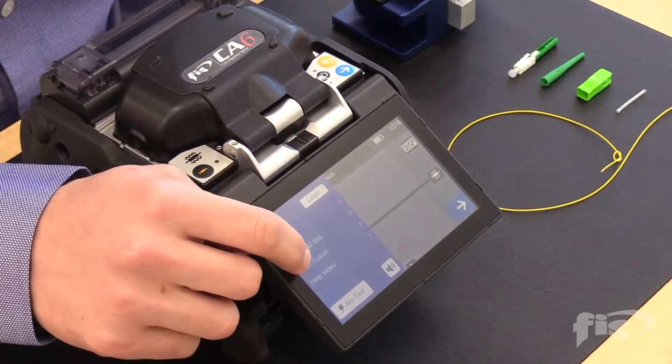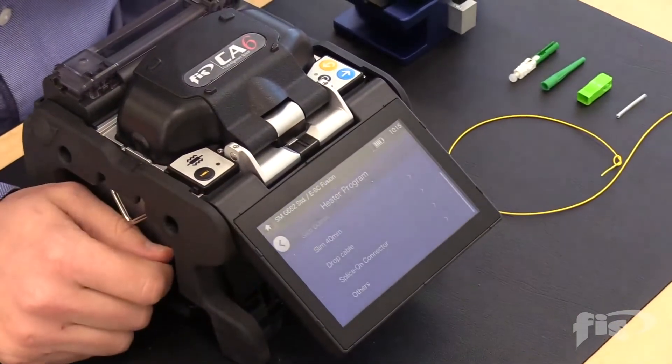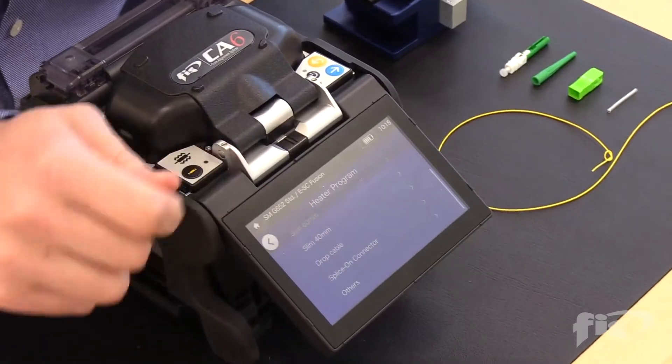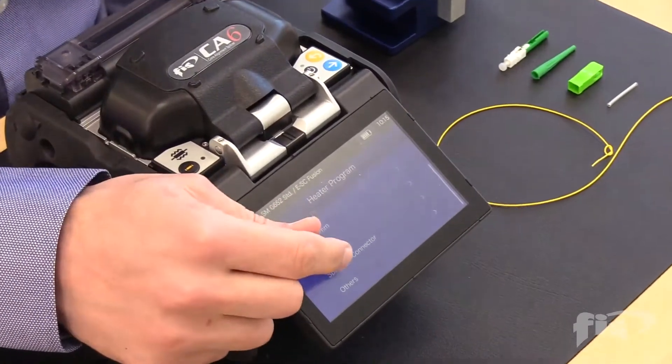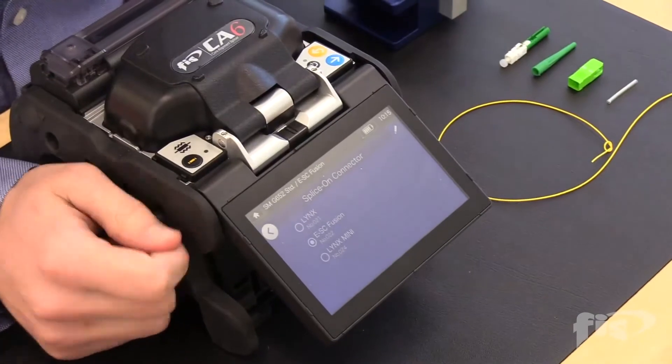For the oven setting, click on the menu icon and select E-SC Fusion. Next, select Splice-On Connector after that E-SC Fusion.